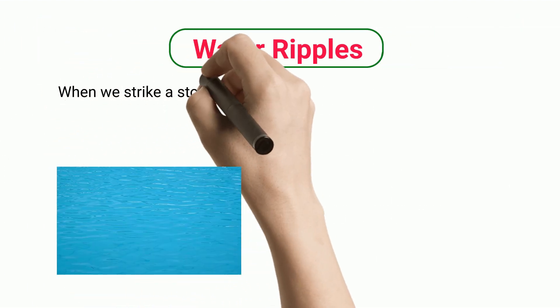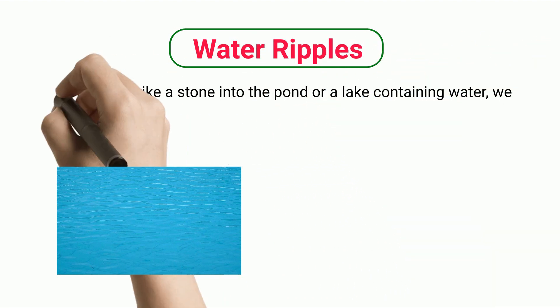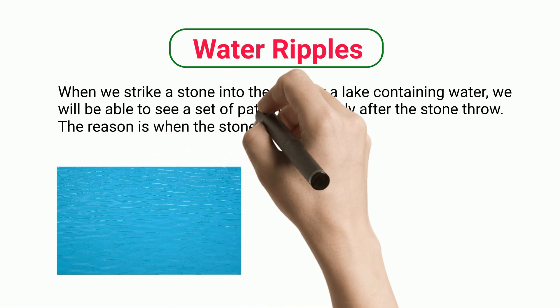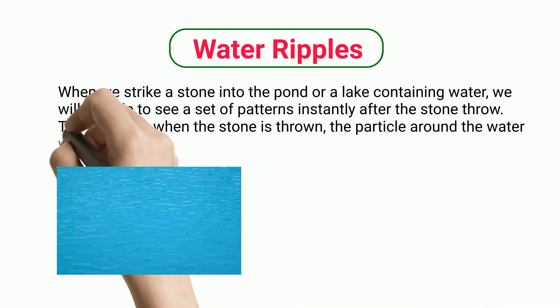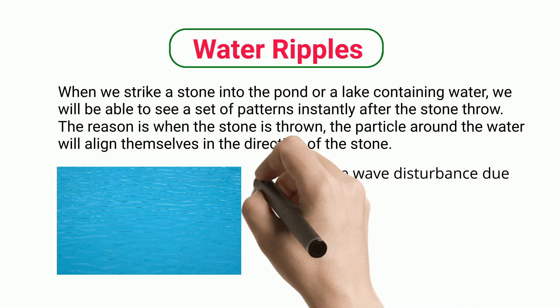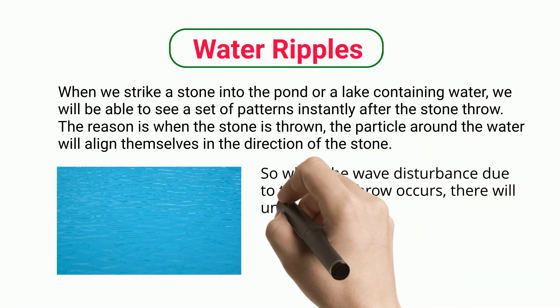Water ripples. When we strike a stone into the pond or a lake containing water, we will be able to see a set of patterns instantly after the stone throw. The reason is when the stone is thrown, the particles around the water will align themselves in the direction of the stone. So when the wave disturbance due to the stone throw occurs, there will undoubtedly be a pattern.